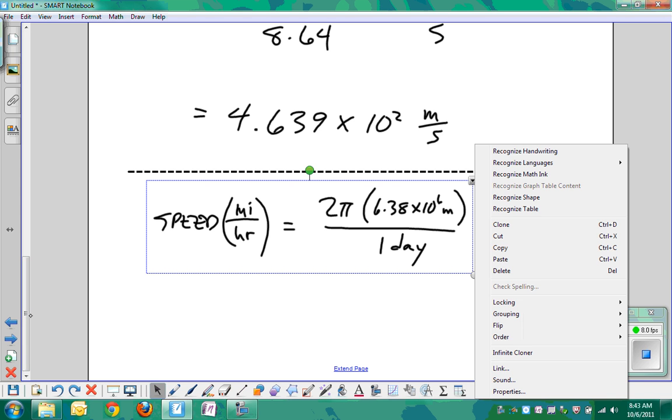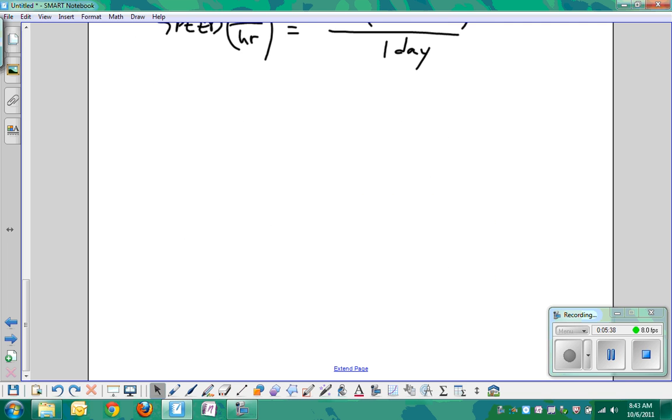We have 2π × 6.38 × 10^6 meters divided by 1 day. What factors are we going to need? What are our conversion factors? One day—we need to get that to hours for miles per hour. A day equals 24 hours.